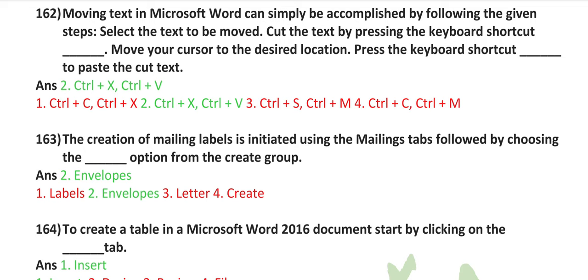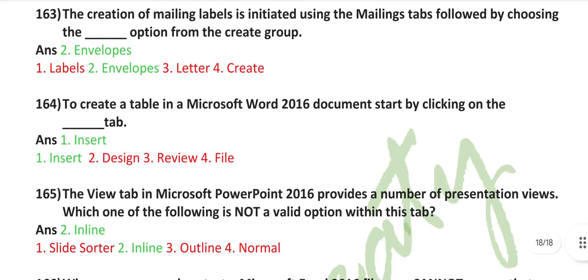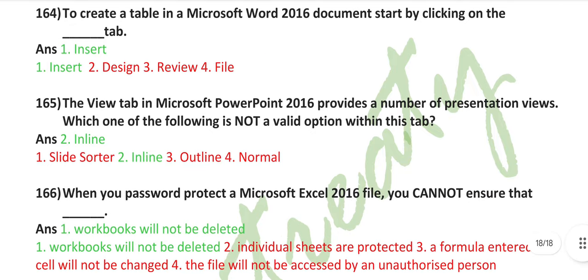Press the keyboard shortcut Control plus V to paste the cut text. The creation of mailing labels is initiated using the mailings tab, followed by choosing the envelopes option from the create group. To create a table in a Microsoft Word 2016 document, start by clicking on the insert tab.